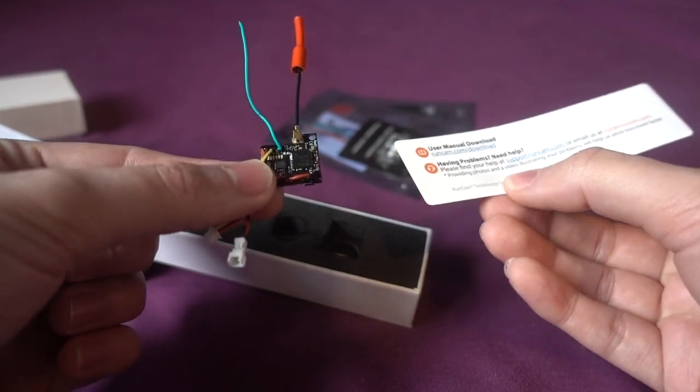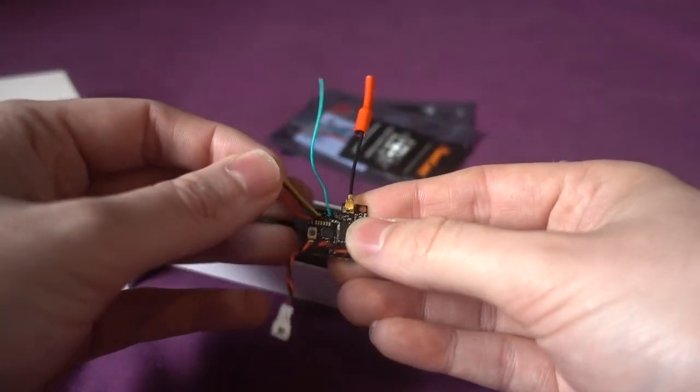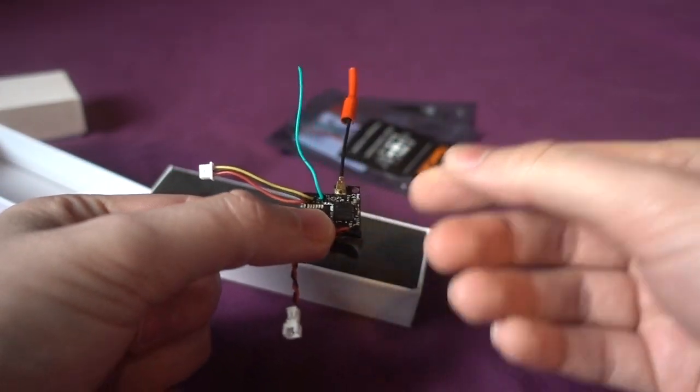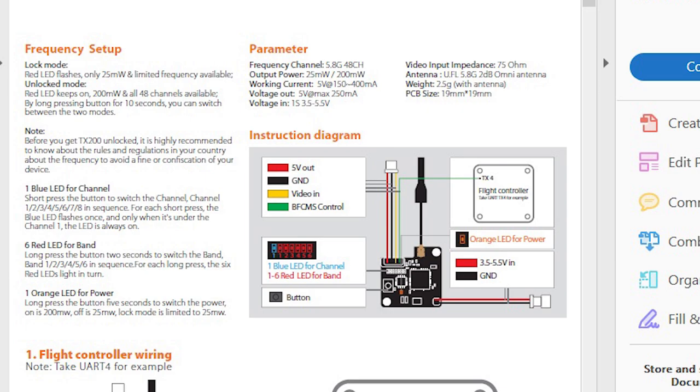Now there's no instructions here, you have to go online and download them and it's a little bit unclear if I'm honest. Because if you remember the original TX 200, they said it was a switching VTX but it wasn't. Some channels were 25 milliwatt and other channels were 200 milliwatt. And that is the same case with this one. In fact, you have to press the button down. It says wait for a red light and then it's unlocked and I guess that means you can use all of the channels.